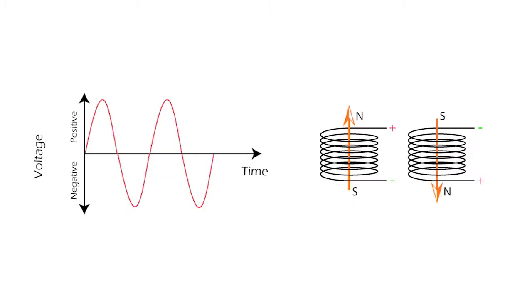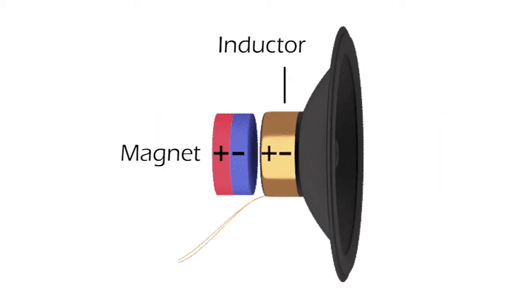In the case of a loudspeaker, the magnetic field of the inductor will be varying in intensity as well as in polarity, since the electric current is also varying in intensity and polarity. So the magnet will be constantly pushing and pulling the inductor, making it move forth and back.